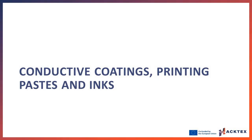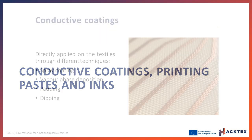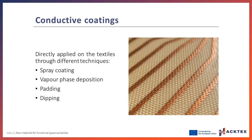Conductive coatings, printing pastes, and inks have to be compatible with textile materials, and present good adhesion, washing durability, and stretchability. Conductive coatings can be directly applied on textiles via spray coating, vapor phase deposition, padding, or dipping. The functionality is imparted directly onto regular fabrics, enlarging the possibilities for development of conductive textiles.